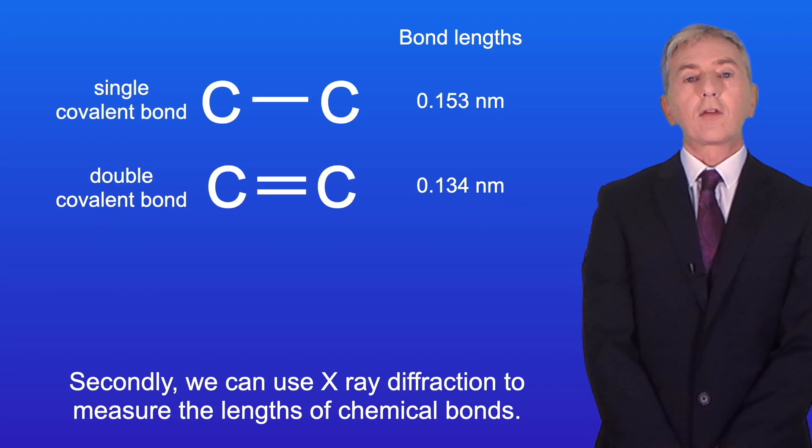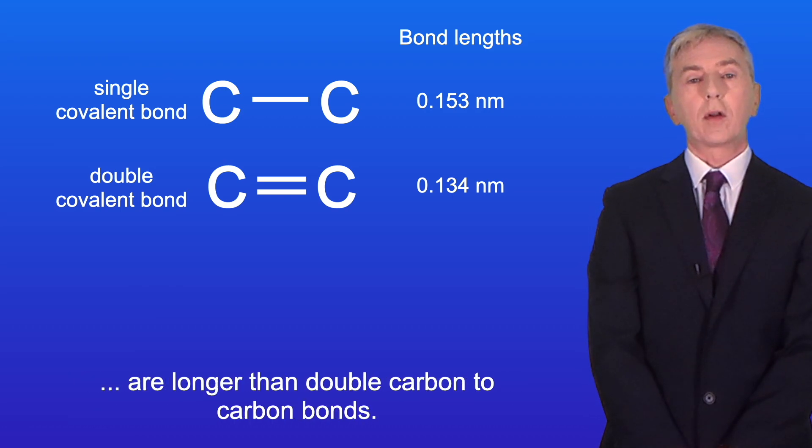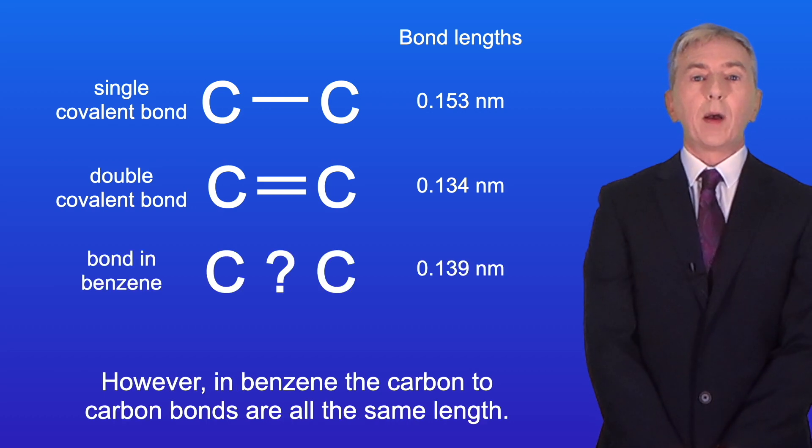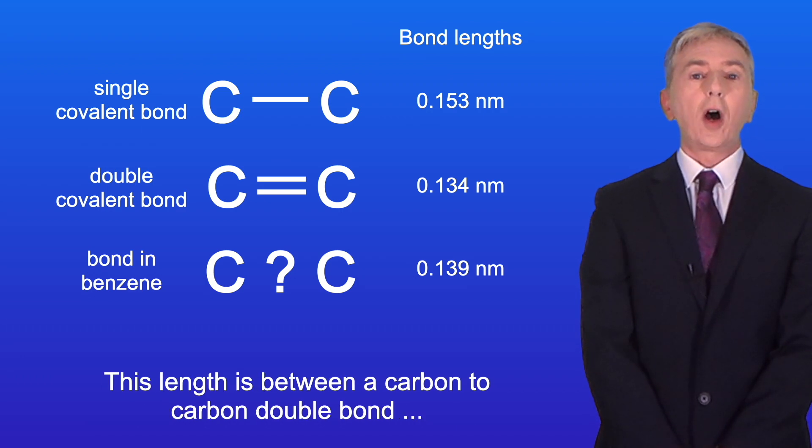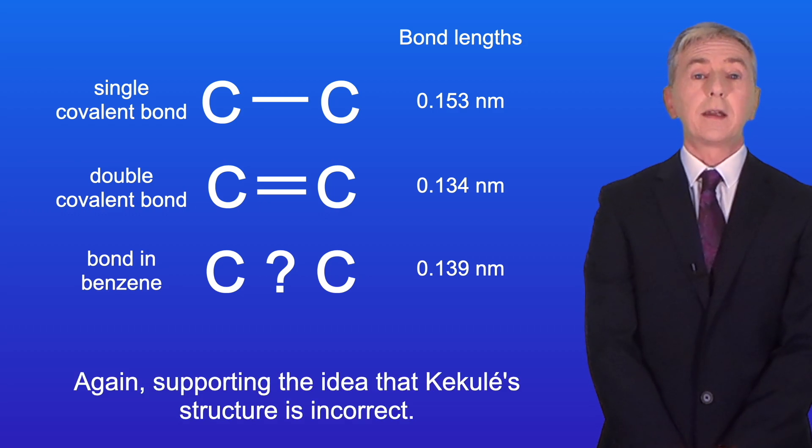Secondly, we can use x-ray diffraction to measure the lengths of chemical bonds. This tells us that single carbon to carbon bonds are longer than double carbon to carbon bonds. However, in benzene the carbon to carbon bonds are all the same length and this length is between a carbon to carbon double bond and a carbon to carbon single bond, again supporting the idea that Kekulé's structure is incorrect.